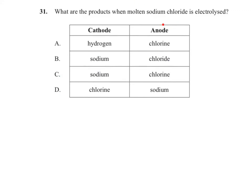Question 31 asks for the products when molten sodium chloride is electrolysed. In electrolysis, the cathode is negative and the anode is positive. At the cathode, the positive sodium cation gains an electron to form sodium metal. At the anode, the negative chloride ion gives up an electron; two chloride ions combine to form chlorine gas. Therefore the answer is C: sodium at the cathode, chlorine at the anode.